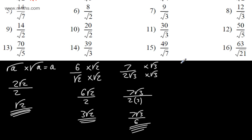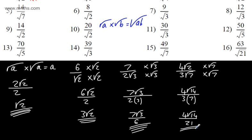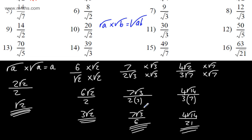Let's try another: 4 root 2 over 3 root 7. All I need to do is multiply the numerator and denominator by root 7. Using the law that root A times root B equals root AB, I get 4 lots of root 14 over 3 multiplied by 7, which gives 4 root 14 over 21. We can't simplify that further as 4 and 21 share no common factors other than 1.